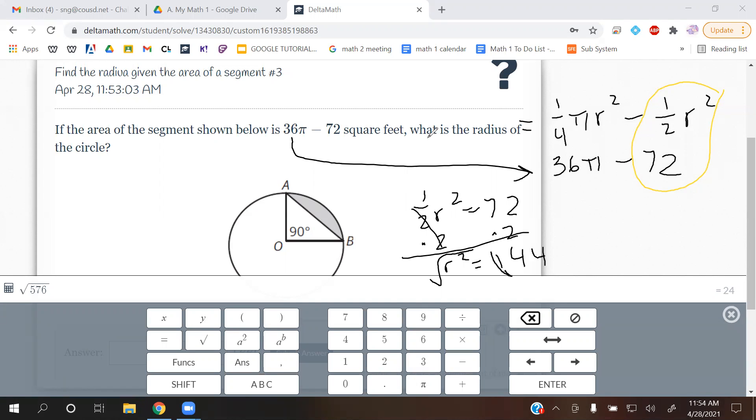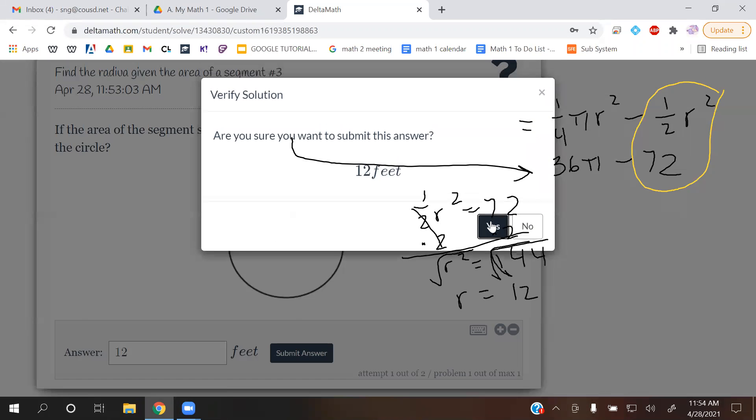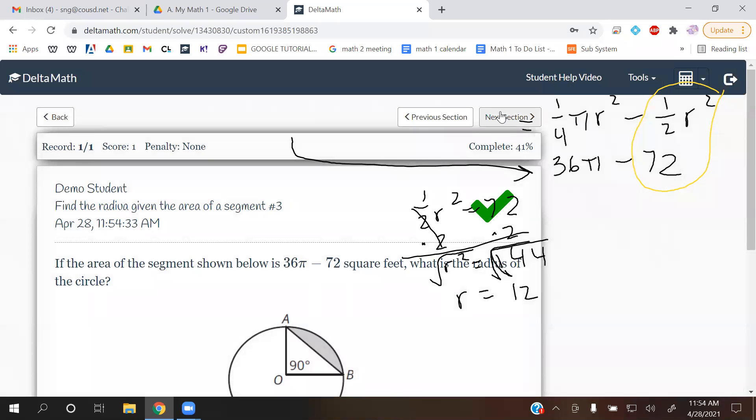Then you square root both sides. And then you get r is equal to, if you don't know it, that's okay. You can type it in. r is equal to 12. So same step. Here's your formula. Take the part that's being subtracted, set them equal to each other. Multiply by 2. Take the square root. That's your answer.